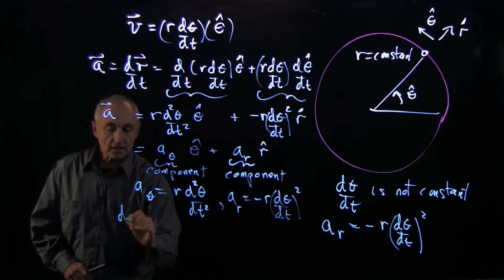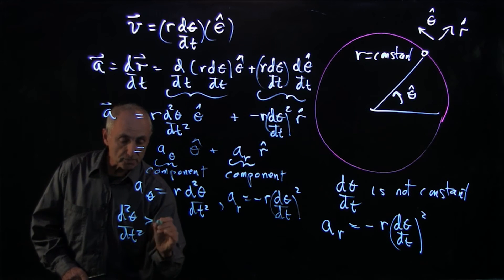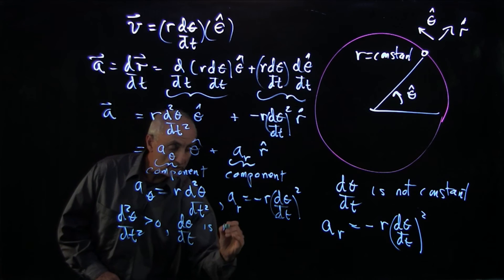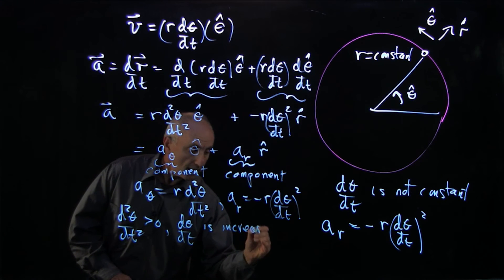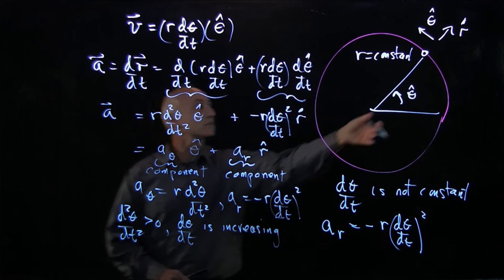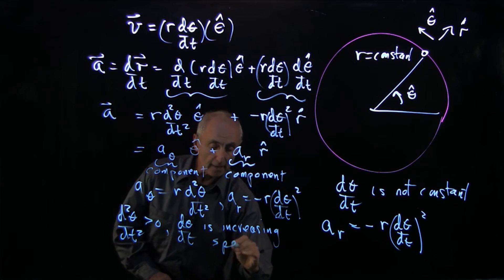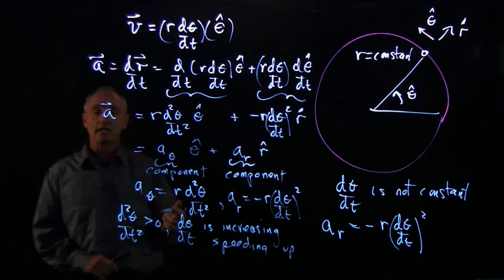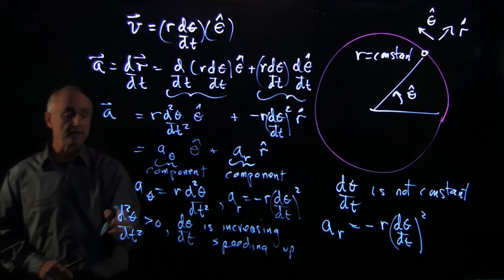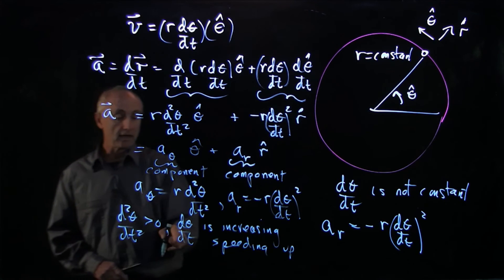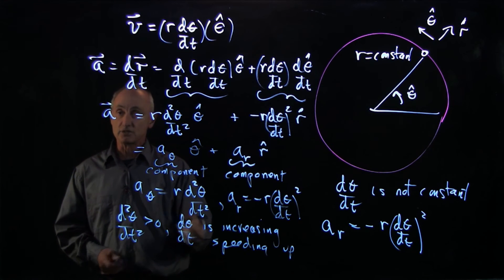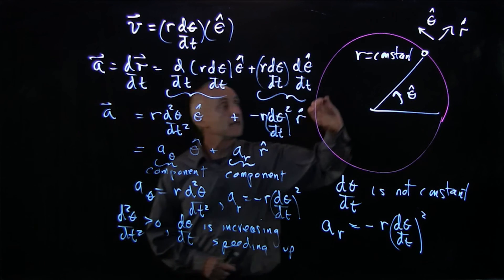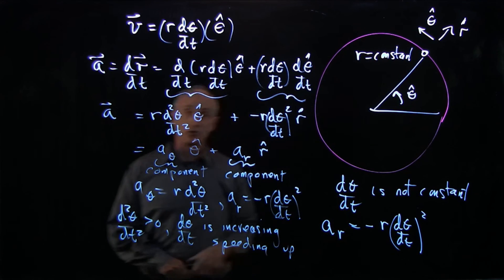When d squared theta dt squared is positive, it means d theta dt is increasing. So if this object is going in the clockwise direction, we call that speeding up. Similarly, when d squared theta dt squared is negative, then d theta dt is decreasing, so it can be slowing down. Or if it slows down and stops, it can start to move in the other direction.